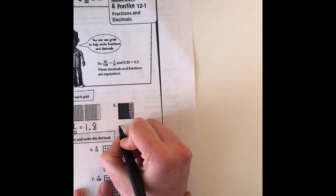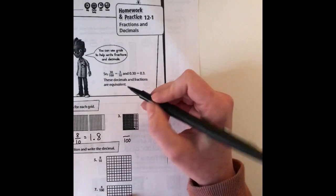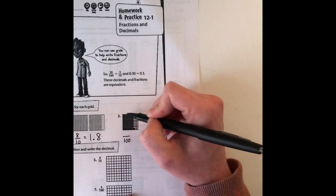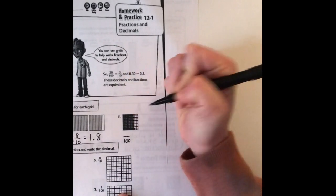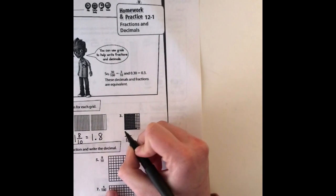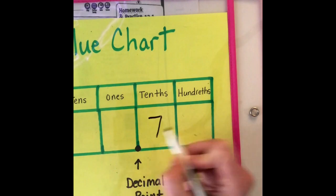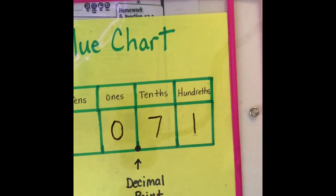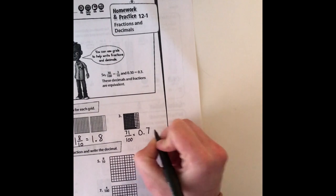For number three, we have hundredths, so my denominator is going to be 100. It's a little hard to see the parts filled in — rather than counting each individual square, I'll count each row knowing each row has ten. There are 1, 2, 3, 4, 5, 6, 7 full rows filled in, and one little square down here. So our fraction is 71 hundredths. Using my chart, my last digit ends in the hundredths place, so I write 71, put a zero in the ones place, and the decimal is 0.71 — seventy-one hundredths.